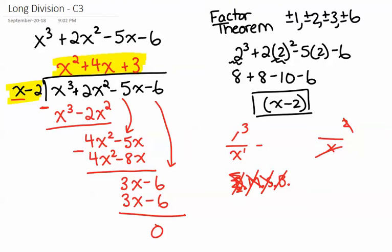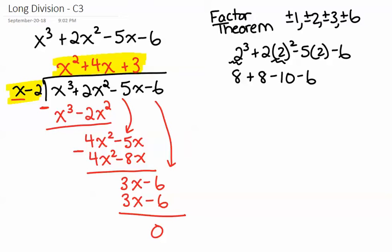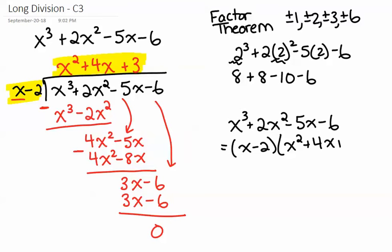Because it turns out that's where our polynomial factored into. So it was x³ + 2x² - 5x - 6, and now we factored it into (x - 2)(x² + 4x + 3).